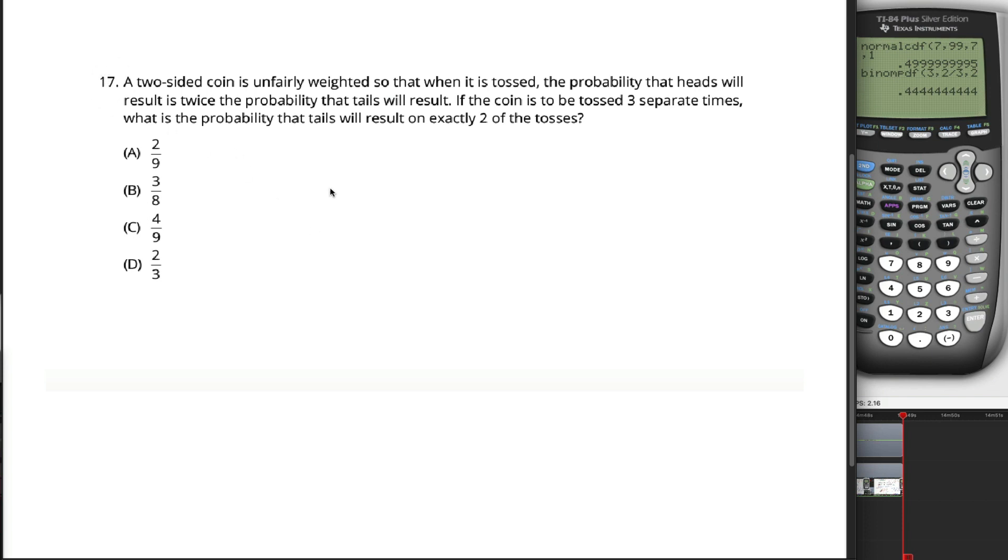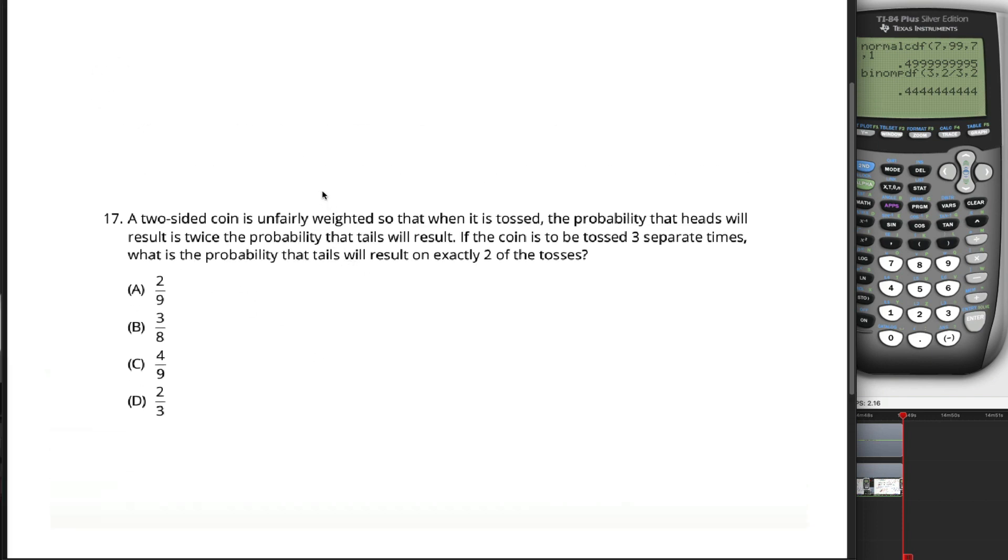All right, question 17, the last of these practice problems for the Praxis 51-65 test. Dealing with probability in this problem, we have a two-sided coin, as opposed to like a three-sided coin, is unfairly weighted so that when it is tossed, the probability that heads will result is twice the probability that tails will result.